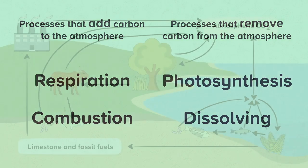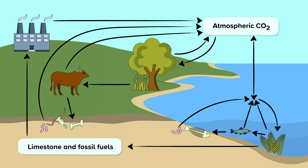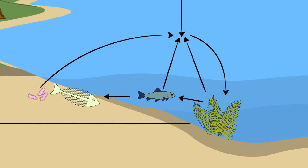Now let's look at this in more detail. There are lots of arrows but if you break it down into sections it's easy to understand. One of the ways carbon leaves the atmosphere is by carbon dioxide dissolving in the oceans. Once dissolved in the water, producers can use it for photosynthesis. This makes carbon available to the consumers who eat the producers. Death and decay passes the carbon to the decomposers. All living organisms — plants, animals and microorganisms — respire. Respiration returns the carbon dioxide to the water, where it could be used for photosynthesis or come out of the ocean and go back into the atmosphere.